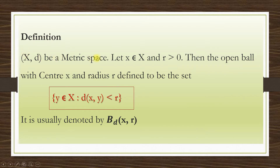Let (X, d) be a metric space, x be an element of X, and r be positive. Then the open ball with center x and radius r is defined to be the set of all y belonging to X such that d(x, y) < r. That is, the set of all elements in X such that the distance between x and y is strictly less than r, and is usually denoted by B(x, r).